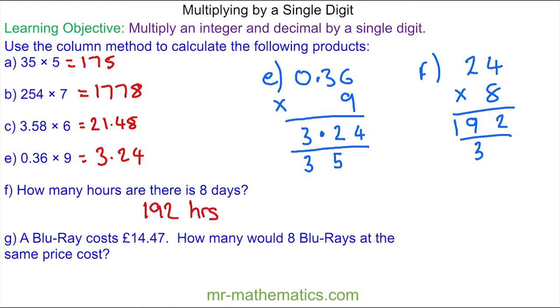And finally for question G. A Blu-ray costs £14.47. How much would 8 Blu-Rays at the same price cost? So we have 14.47 multiplied by 8. We'll line up the decimal point.